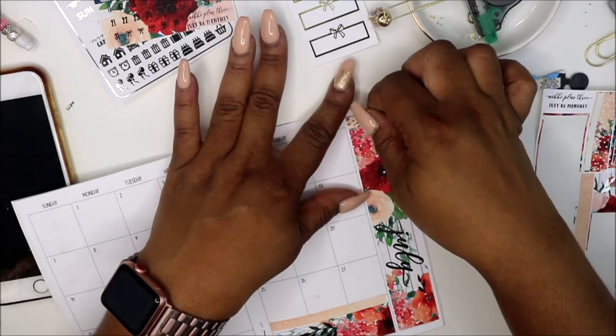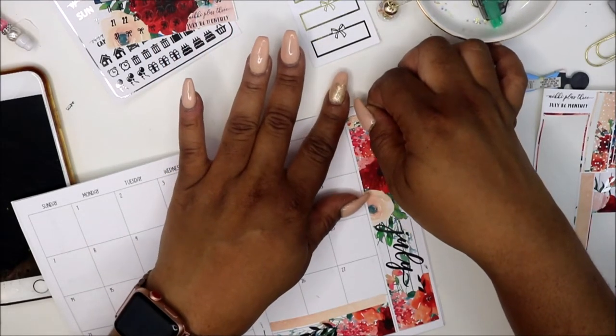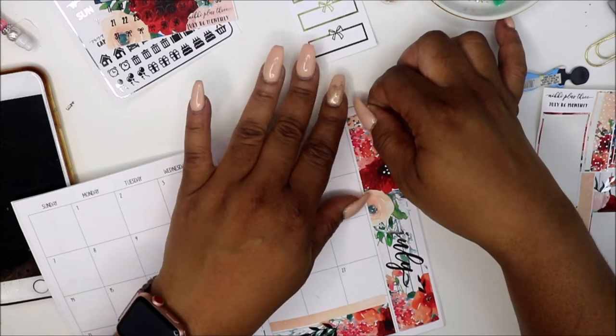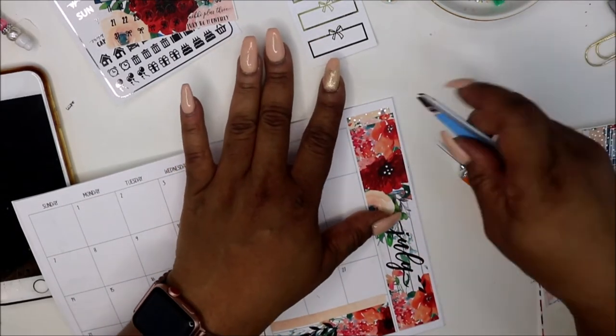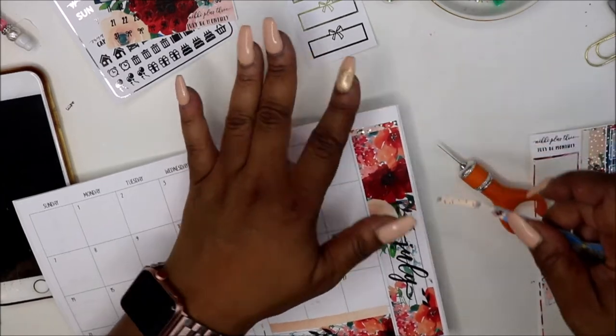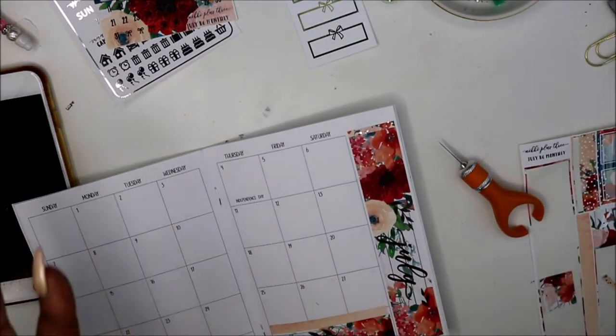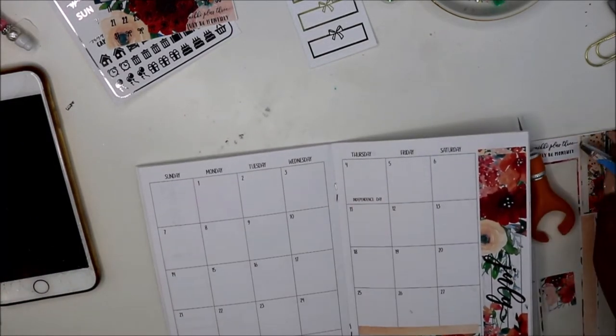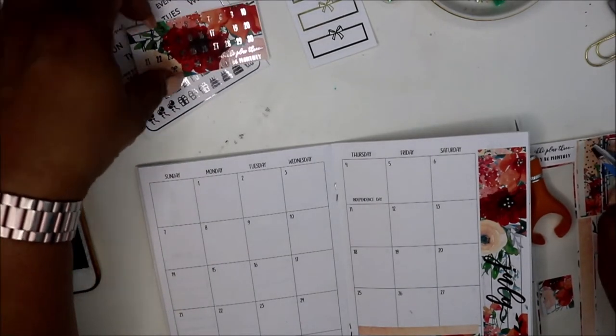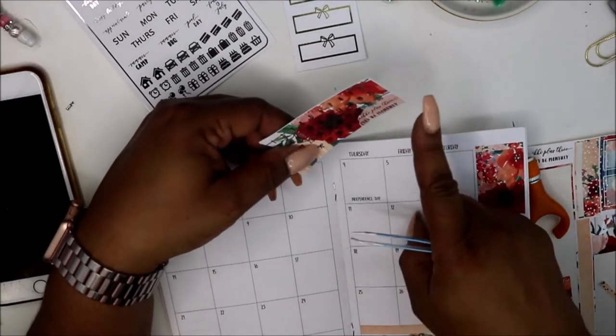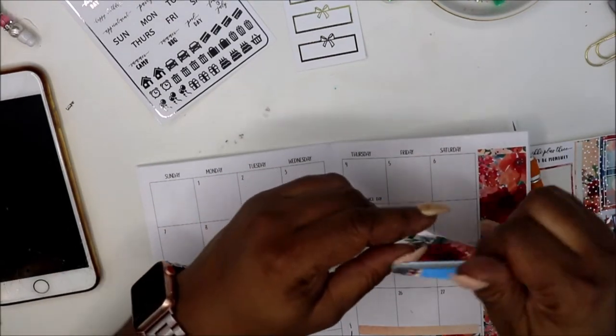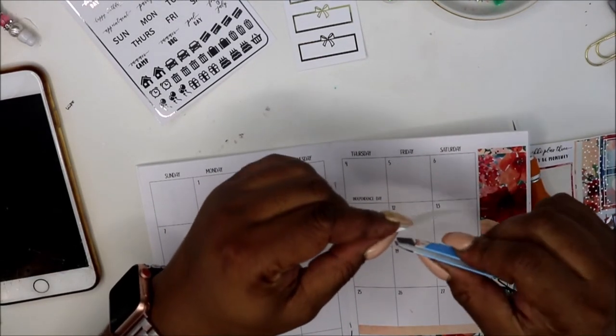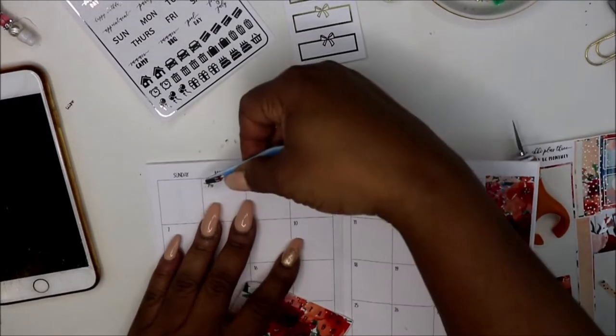And then I'm just going to put the remainder of that over top. I'll try to remember to leave a link to her Etsy store. So these little dots, I'll probably fast forward me putting these because it'll take a while, so I'm going to put these down and I'll be right back.